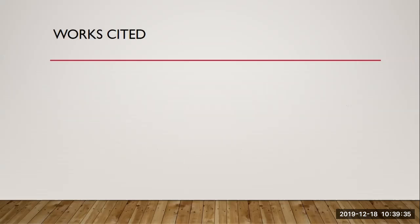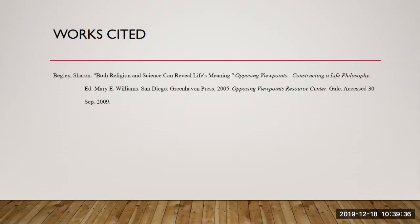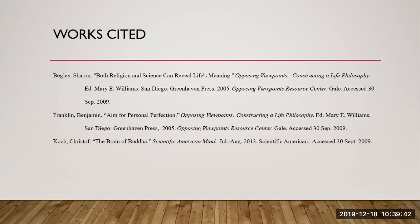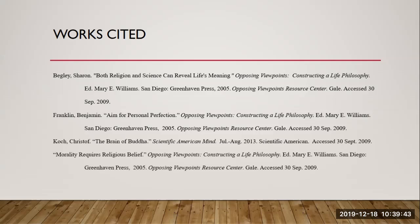Here are all of the previous listings in works cited format. As you can see, the list is alphabetized by last name or by title if an anonymous source. Each of these listings can be easily traced back to the names or titles attributed in the essay.